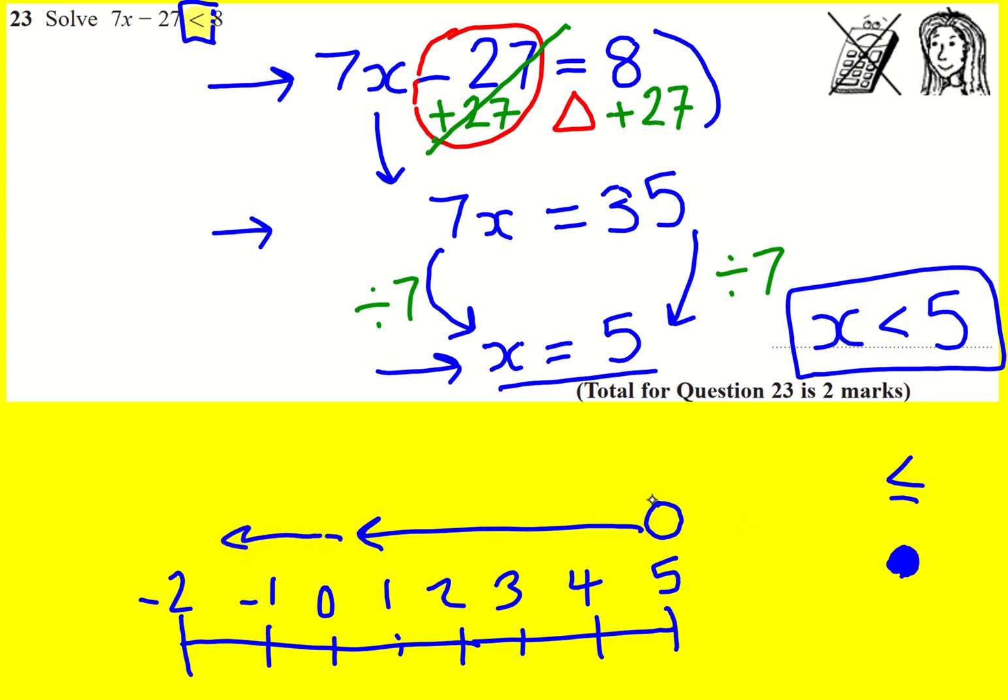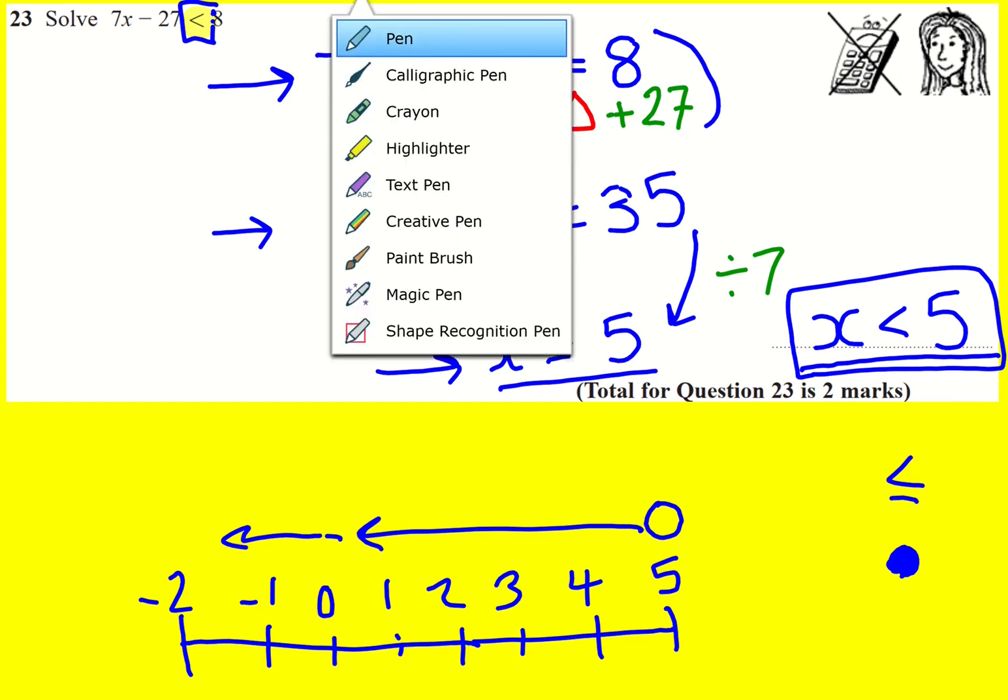You can keep your arrow going, it doesn't really matter, but it's going in that direction. Why? Because it's x is less than 5, so if it's less than 5, clearly it's going to be going in this direction here.